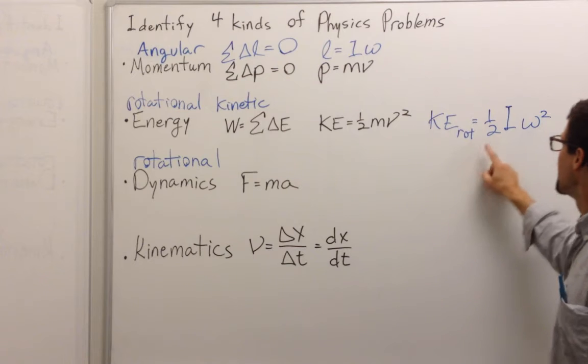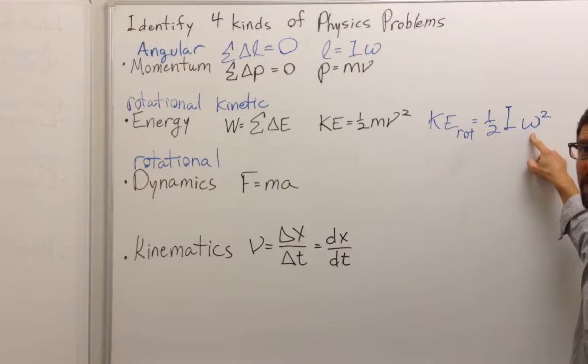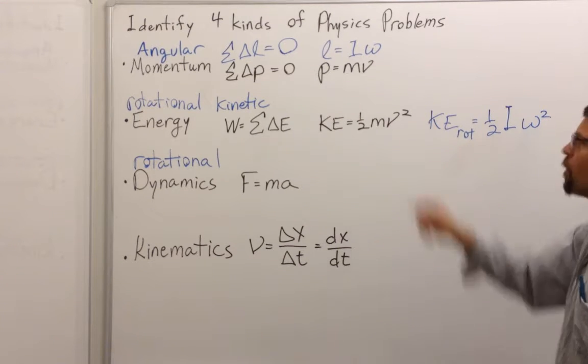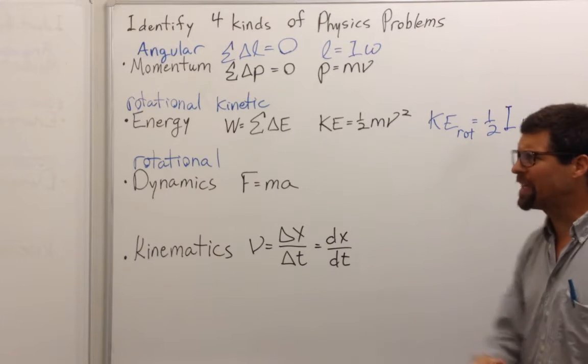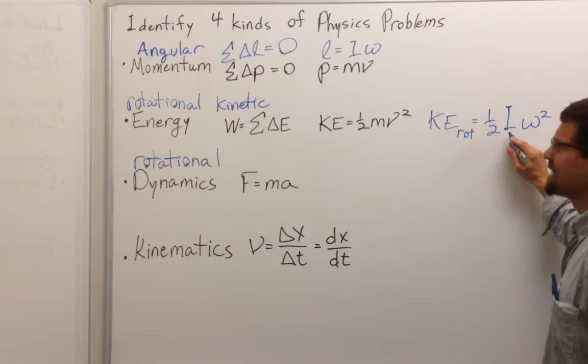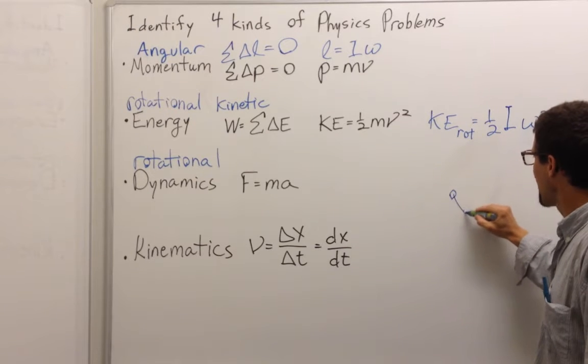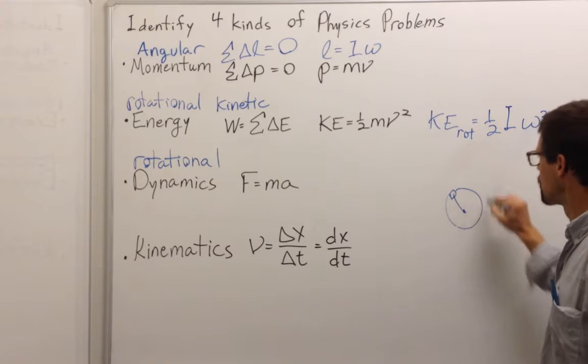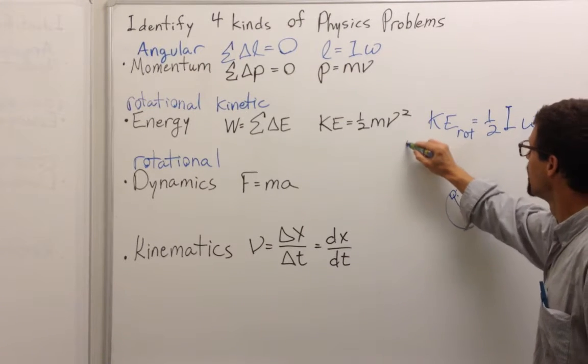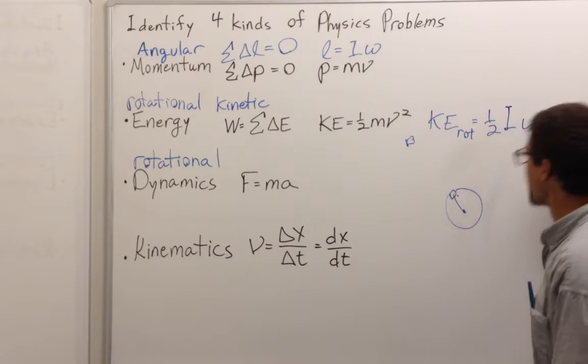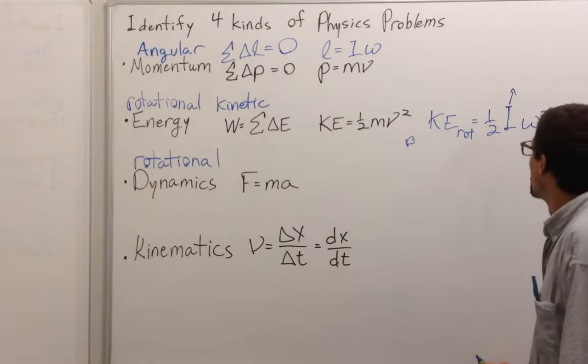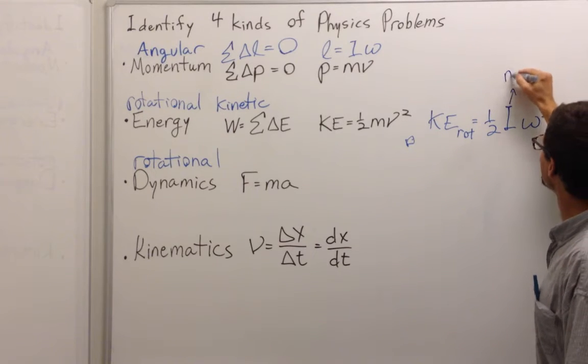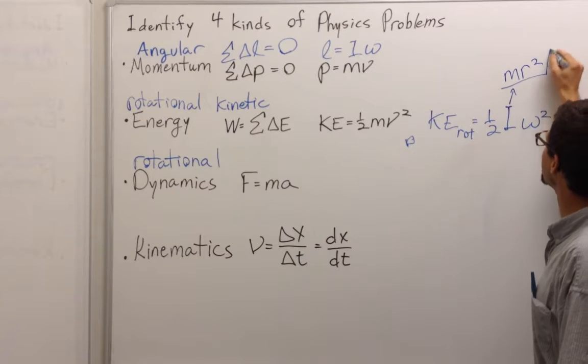Instead of one-half mv squared, it's one-half i omega squared. Again, omega is the rate at which it's spinning, and i is this moment of inertia. And now we can see why i has to have r in it. Because if a mass is rotating around a point, at some rate, one, two, three, it's going much slower now than if it were out here going around one, two, three. So for now, until we talk about it more, we can think of the moment of inertia as the mass times the square of the radius.